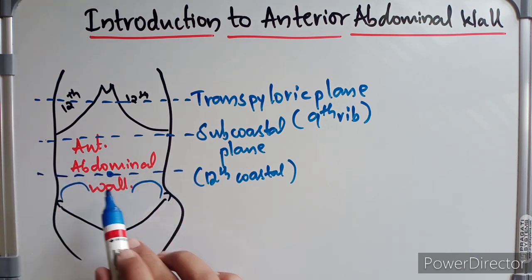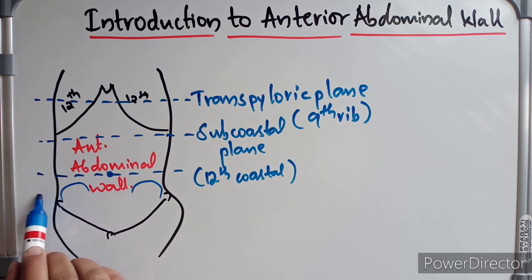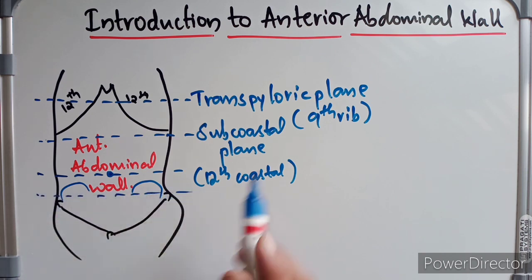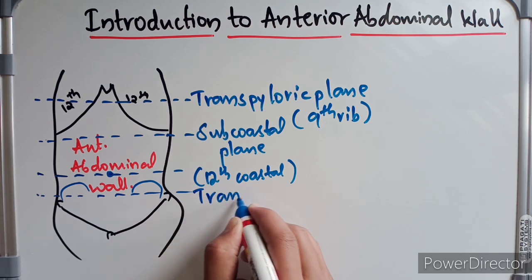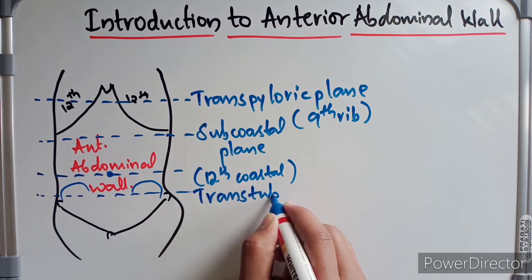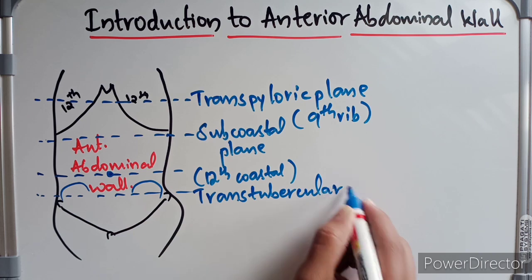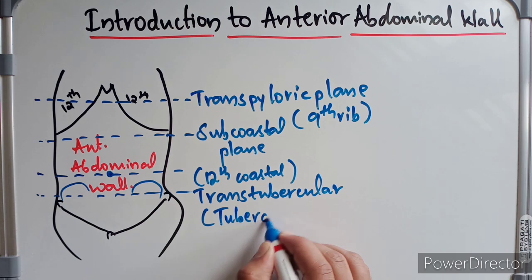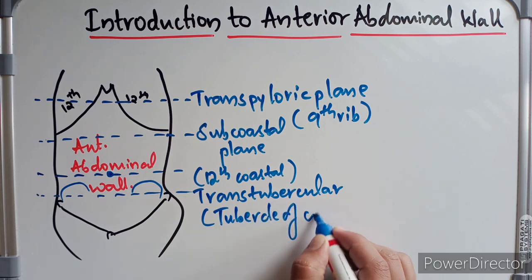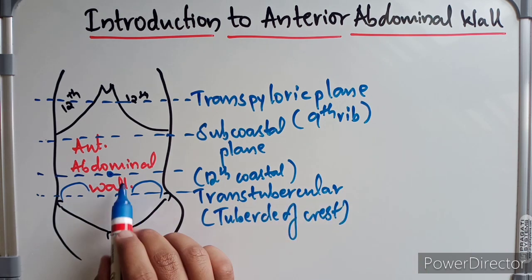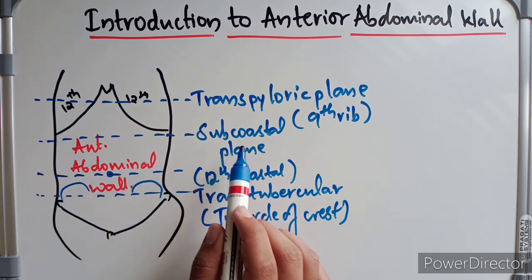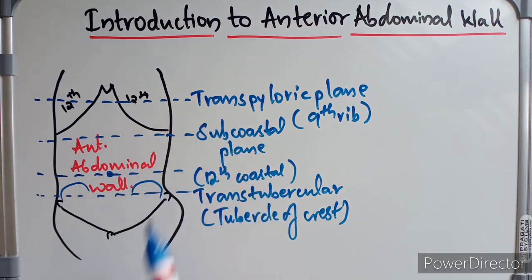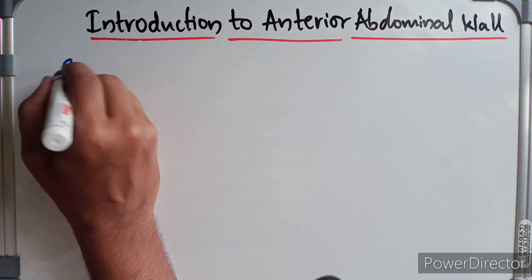We have four important planes: the transpyloric plane, the sub-costal plane, the umbilical plane — which passes through the umbilicus — and the trans-tubercular plane, which passes through the tubercle of the iliac crest. These four planes divide the anterior abdominal wall.